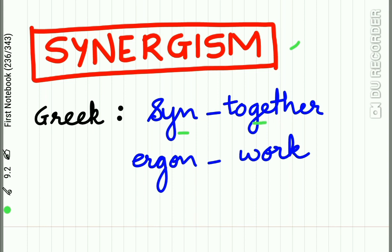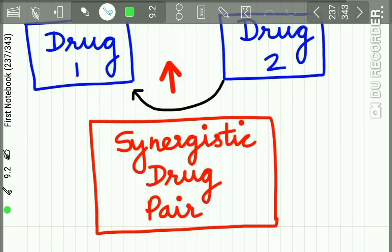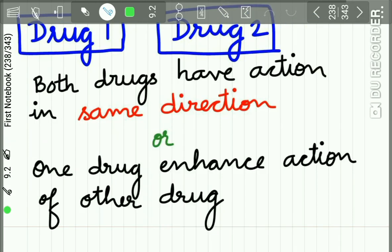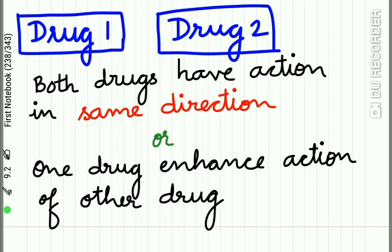In Greek, 'syn' means together and 'ergon' means work, so synergism means working together. When the action of one drug is facilitated or increased by the action of another drug, it is called a synergistic drug pair. Suppose drug one and drug two — if drug two increases the action of drug one, these two are called a synergistic drug pair.